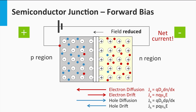Since the width of the depletion zone is smaller — in other words, dx is getting smaller — the density gradients dn/dx and dp/dx become much larger. As a consequence, the current density related to diffusion becomes significantly larger, indicated by the larger arrows. On the other hand, the electric field E is reduced, which means that the current density related to drift is getting slightly smaller.